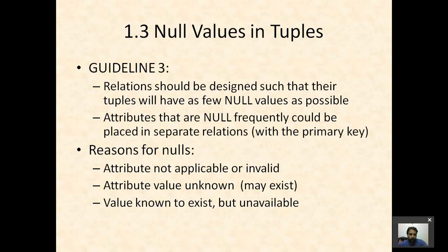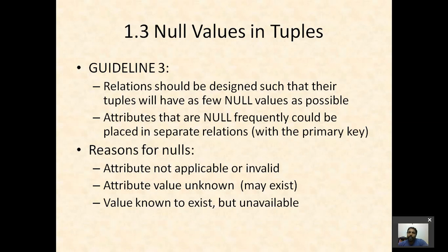For example, if previous degrees of a student are stored in a table, there may not be previous degrees for a particular student — so it may be null. Or for a particular employee, we may not have the birth date — it may exist but is unknown. A third case: we try to store the home phone numbers of all students — it may exist but is currently unavailable. Guideline 3 says we should design relations such that null values will be as few as possible.